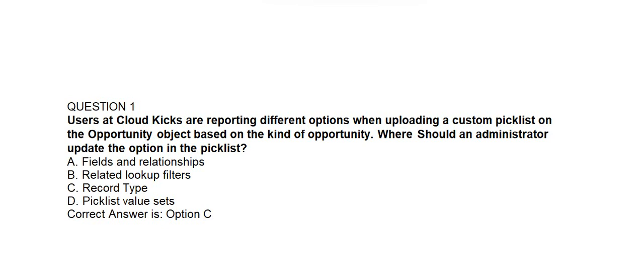Option A: Fields and Relationships. Option B: Related Lookup Filters. Option C: Record Type. Option D: Picklist Value Sets. Correct answer is Option C: Record Type.